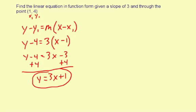So that's the equation in function form — it has a slope of 3 and passes through the point (1, 4). Thank you very much.